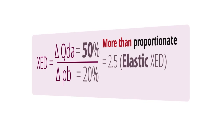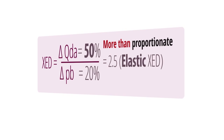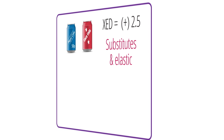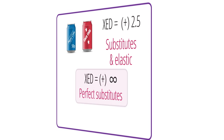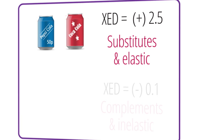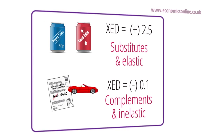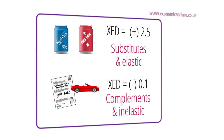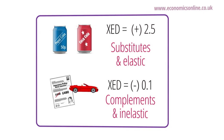So, in the case of Pepsi and Coke, the XED is elastic at plus 2.5, which means that Pepsi and Coke are considered fairly close substitutes. The greater the coefficient, the closer the substitute, so that if the cross-elasticity is positive and infinite, the goods are perfect substitutes. In the case of motor vehicles and motor insurance, while the negative coefficient indicates the goods are complements, the low value at minus 0.1 indicates that the response is much less than proportionate, suggesting that changes in motor insurance premiums have a relatively small impact on the demand for vehicles.